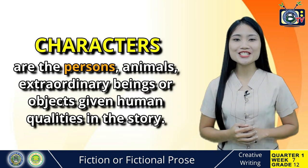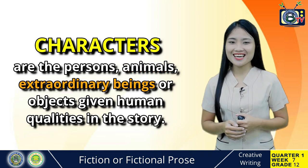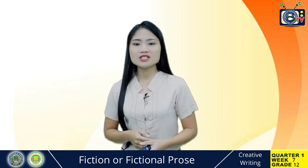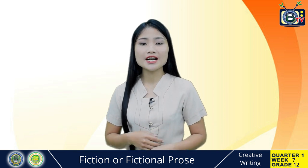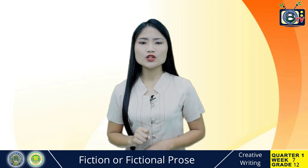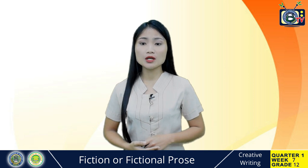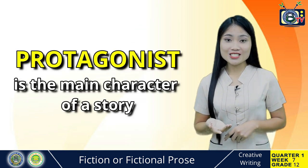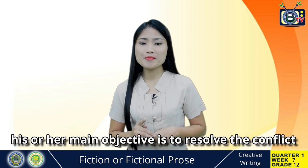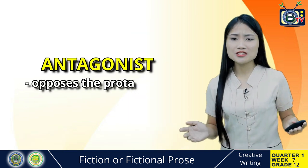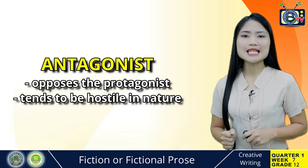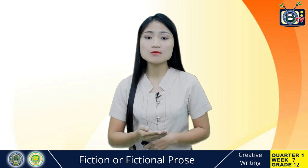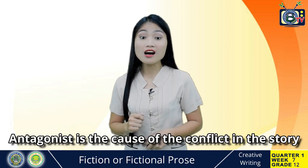For the second element of fiction, we have characters. Characters are the persons, animals, extraordinary beings, or objects given human qualities in the story. They are also considered as the stars in a story, as events in a story revolve around the characters. Remember that each character has a role or purpose to play. Characters can be classified according to the role they play in the story, so we have the protagonist and the antagonist. The protagonist is the main character of a story, and his or her main objective is to resolve the conflict presented in the story. The antagonist, on the other hand, opposes the protagonist and tends to be hostile in nature, usually being the cause of the conflict.